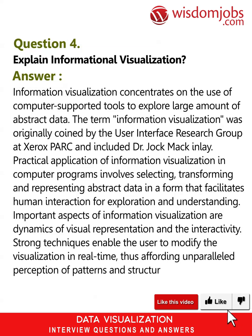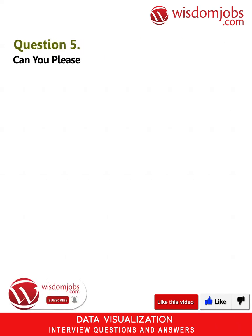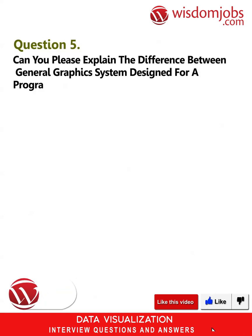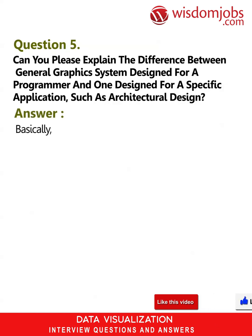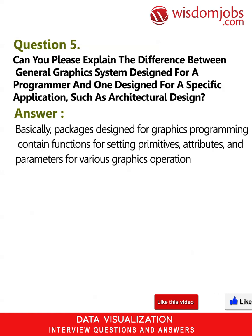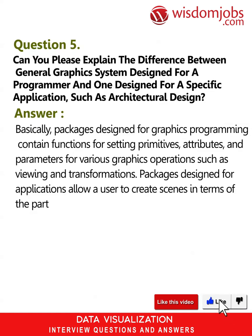Question 5: Explain the difference between a general graphics system designed for a programmer and one designed for a specific application such as architectural design. Answer: Packages designed for graphics programming contain functions for setting primitives, attributes, and parameters for various graphics operations such as viewing and transformations. Packages designed for specific applications allow a user to create scenes in terms of the particular application rather than in terms of graphics functions.